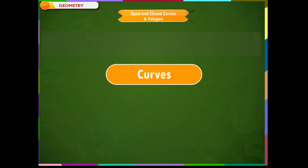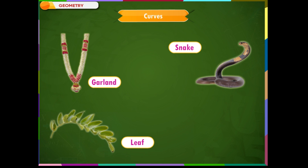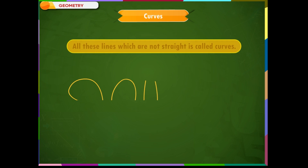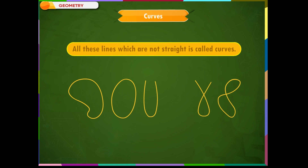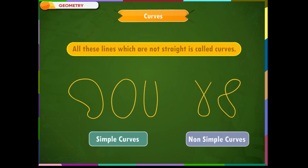Open and closed curves and polygons. We normally come across certain lines which are not straight in our life. For example, a garland, a snake, a leaf or a petal of a flower. All these lines which are not straight are called curves. If a curve does not cross itself, it is called a simple curve. Curves that cross themselves are called non-simple curves.